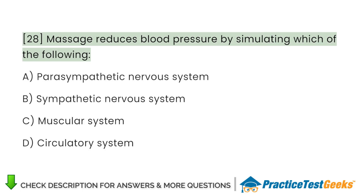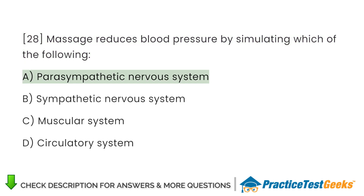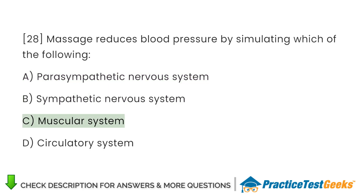Massage reduces blood pressure by simulating which of the following? A. Parasympathetic nervous system. B. Sympathetic nervous system. C. Muscular system. D. Circulatory system.